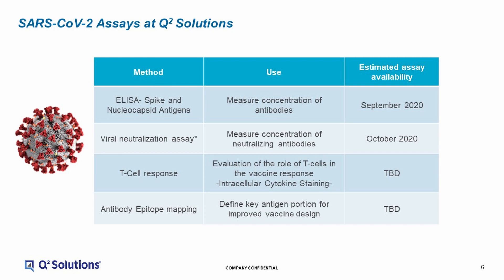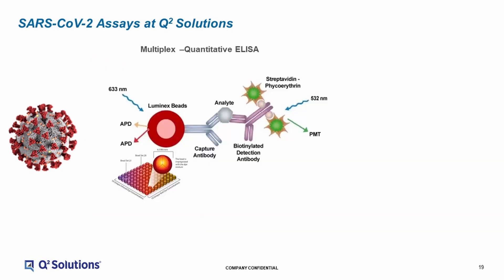We will go through these one at a time, first focusing on ELISA methodologies. For ELISA, we're developing a multiplex assay platform that uses Luminex beads. The target antigens that we're using for this assay include S1, S2, S1 plus S2 including the extracellular domain, the receptor binding domain, and in addition, we're including the nucleocapsid region. In case vaccine developers might have a key antigen for their specific vaccine, we can also add that to our assay format to meet the specific needs of a vaccine developer.